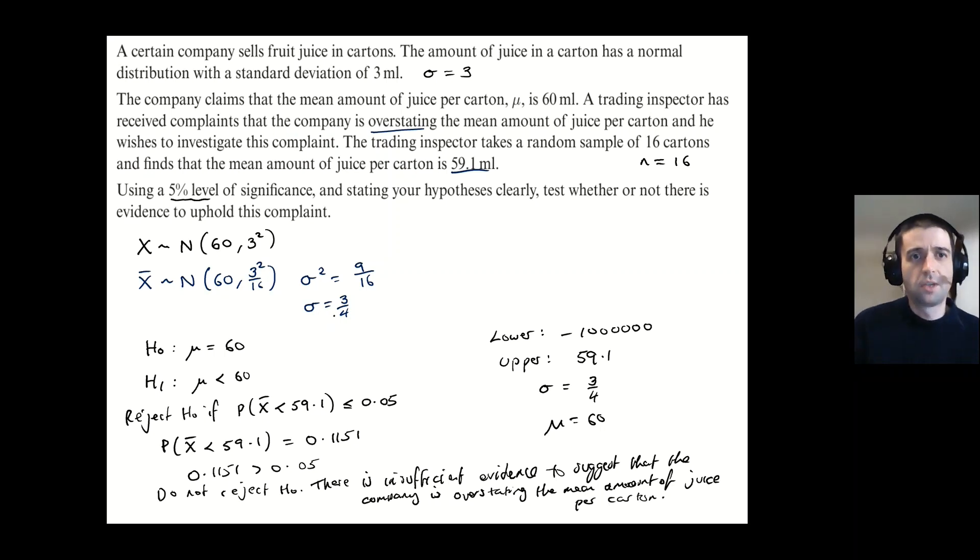So recap of key points. Then we defined our population normal distribution X as a normal 60, 3² using the standard deviation shown. We then adjusted that for the sample mean by dividing the variance 3² by 16, which was the size of the sample we took. That gave us a new standard deviation of three quarters, which we used in our subsequent calculations. And when the probability of this value occurring was greater than the significance level, we said that there was not enough evidence to reject H₀.